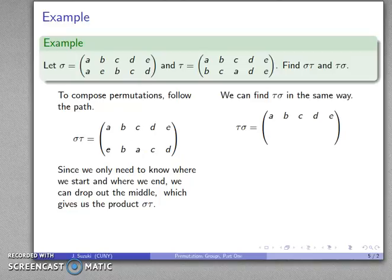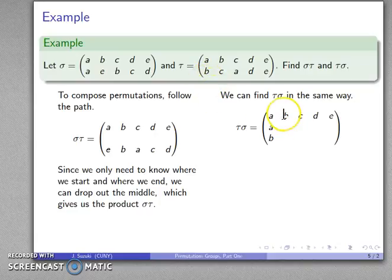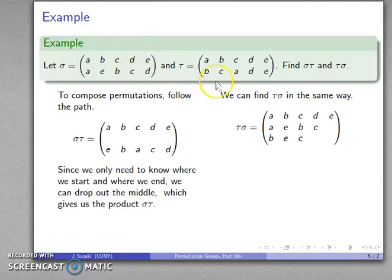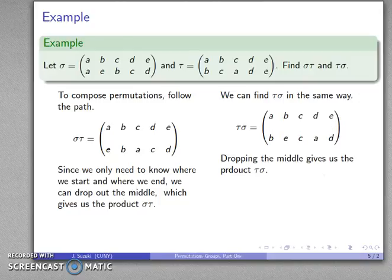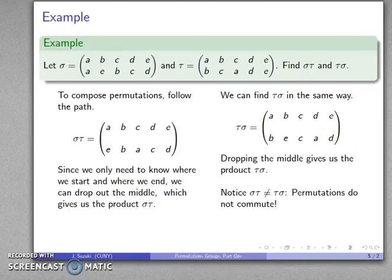Likewise, tau∘sigma can be found the same way, but now I apply sigma first, then tau. A — sigma sends A to A, then tau sends A to B. B — sigma sends B to E, then tau sends E to E, no change. C — sigma sends C to B, then tau sends B to C. D — sigma sends D to C, then tau sends C to A. E — sigma sends E to D, then tau sends D to D, no change. Dropping the middle row gives us the product tau∘sigma. One of the most important things to notice is that sigma∘tau and tau∘sigma are not the same permutation — permutations do not commute.